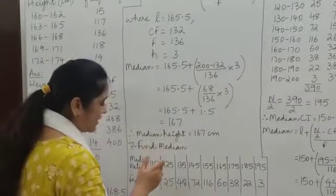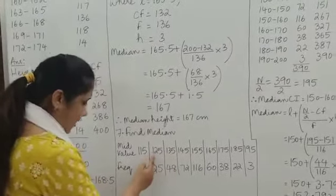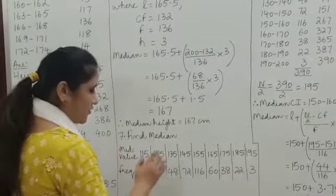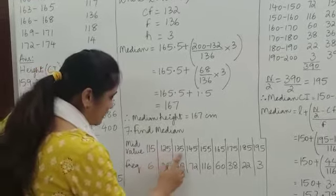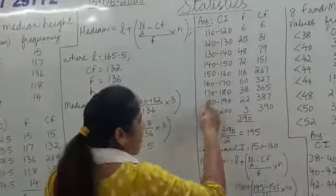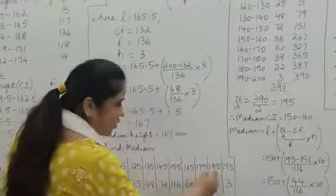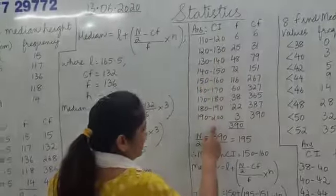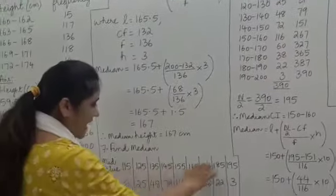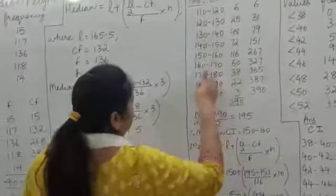To repeat: take any two consecutive class marks — say 145 and 135. Find the difference, which is 10. Divide by 2 to get 5. Subtract 5 from all class marks to get the lower limits of the class intervals, and add 5 to all class marks to get the upper limits. That gives us our first column: class intervals.